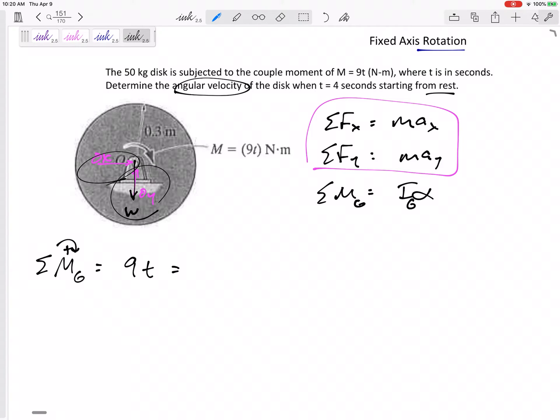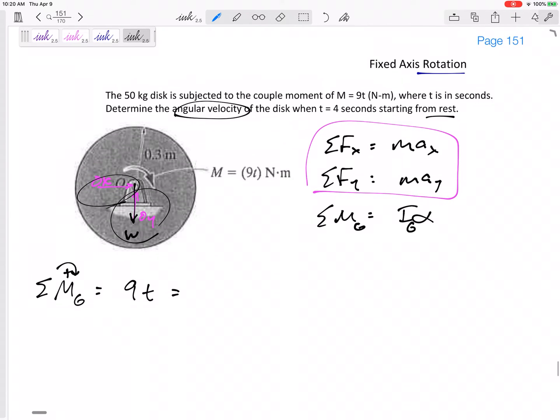That equals Ig alpha. This is a disk. If it doesn't give us any k value, any radius of gyration, then we can assume it's uniform. A uniform disk, if you look in the back of the book, it's actually the I for a cylinder. So the I for a disk or cylinder down the middle of it is one half mr squared. This is Ig alpha, and Ig is one half mr squared, and there's my alpha.